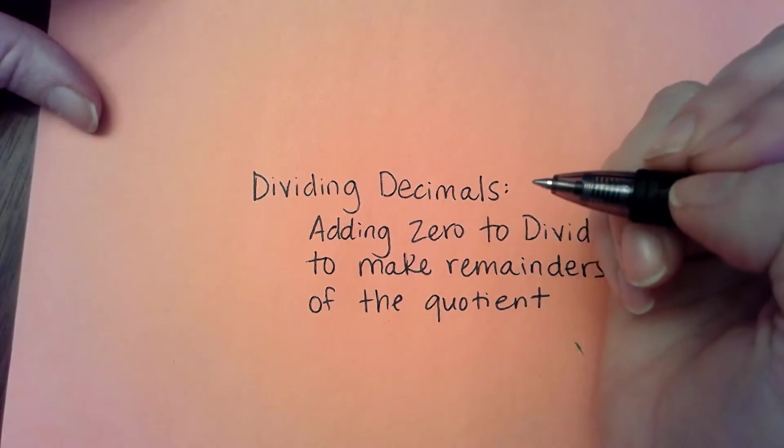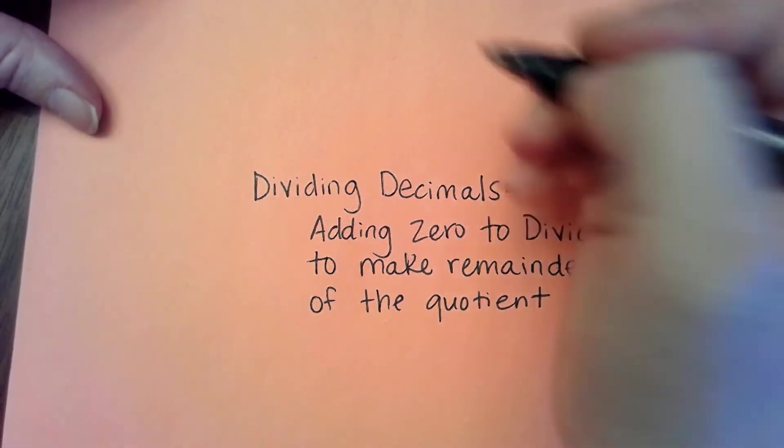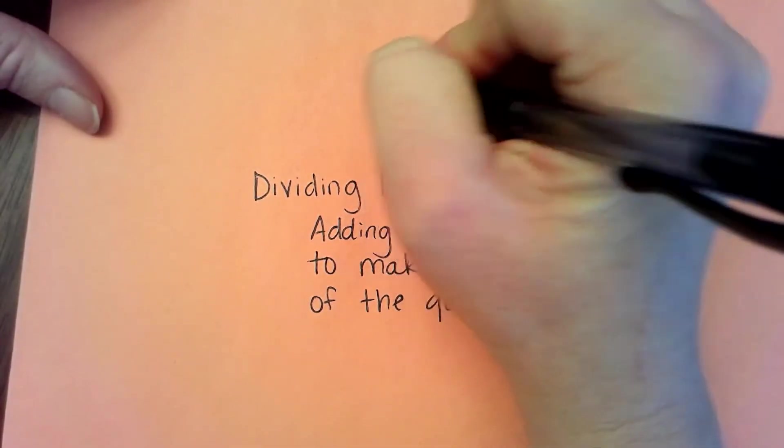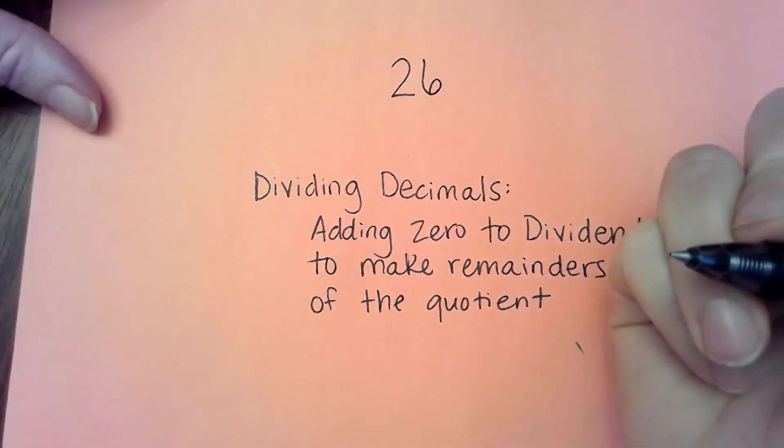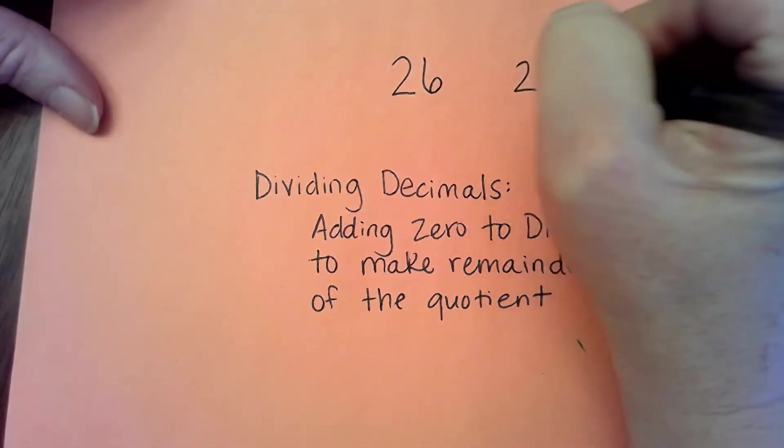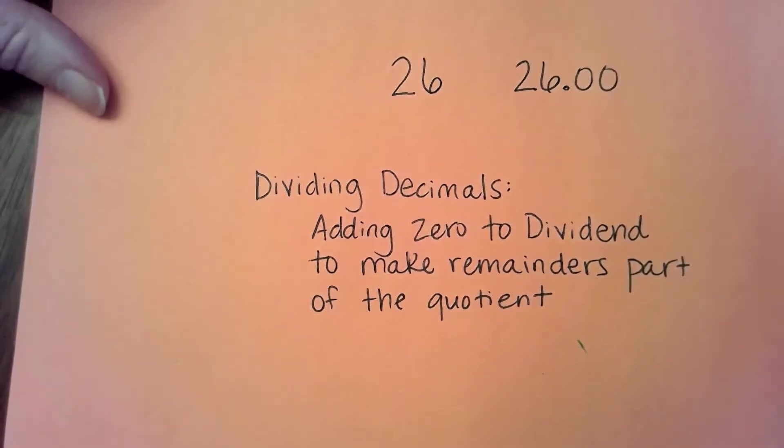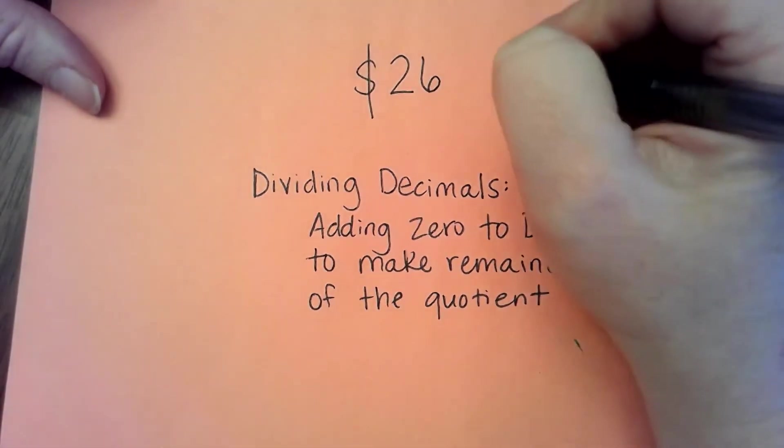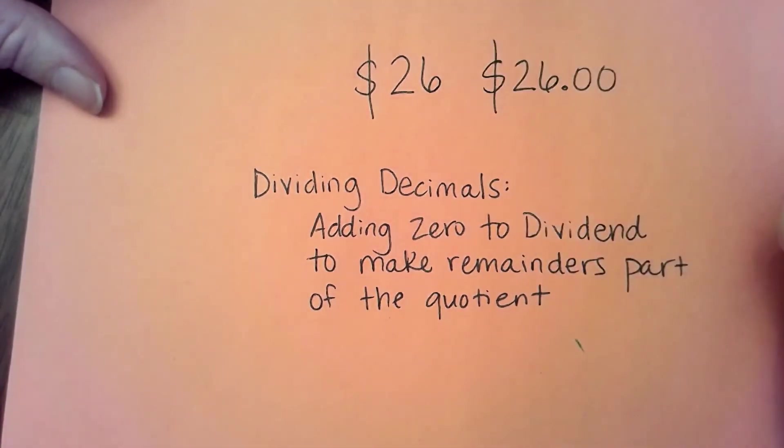The first thing that I need to point out to you in order to make sense of this strategy is that we all know that 26 as a whole number is the same as this. We might be able to relate to this with money. If I had $26, that would be the same thing as if I had $26 and no cents.